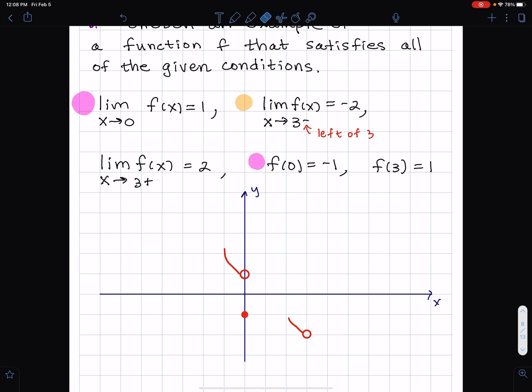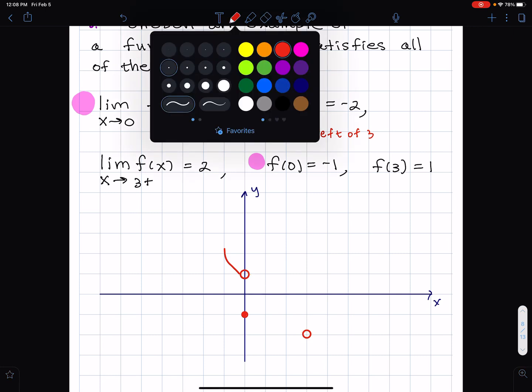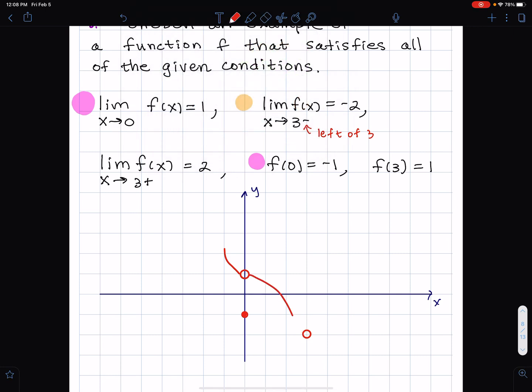Now I need to connect these. And then moving on to the next piece, to the right, the limit from the right of 3 is equal to 2. So I'll draw a circle up here and make a squiggle from the right.